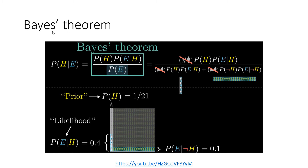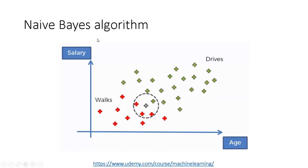Now we are going to talk about Naive Bayes, so let's move on. This is the Naive Bayes algorithm. I'm going to try to explain what's going on here. I got this from a Udemy machine learning course, which is a very good course with very good explanations about the intuition behind the algorithms, and I took from his slides.